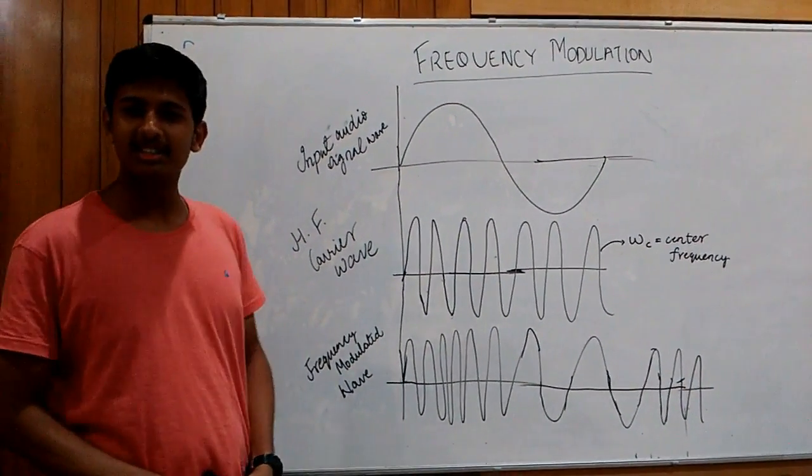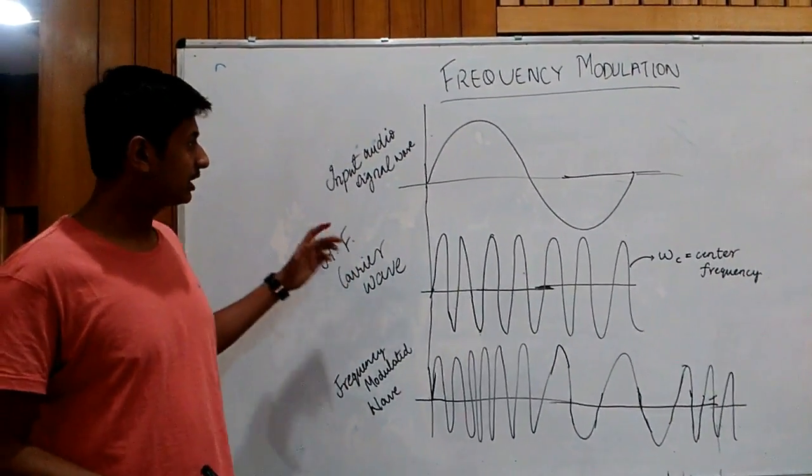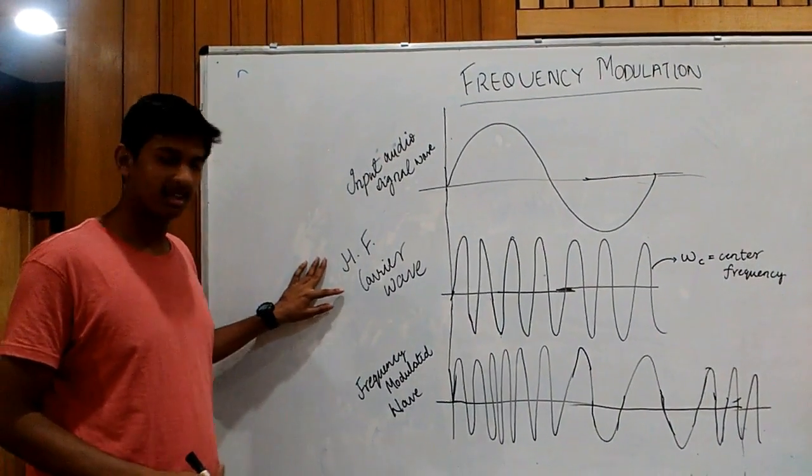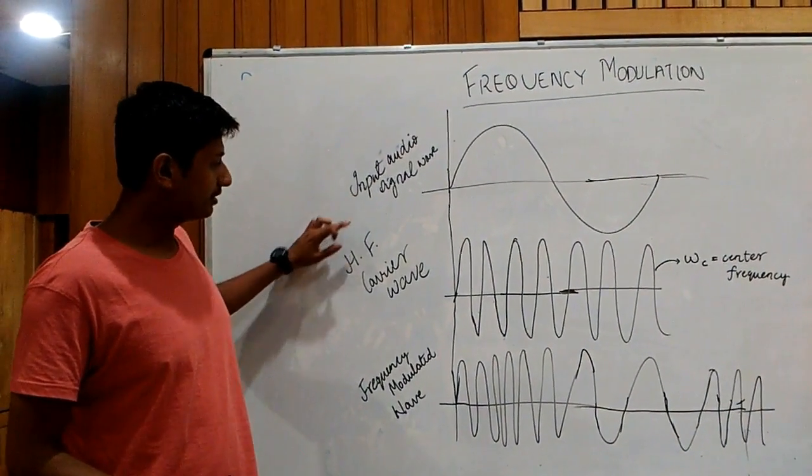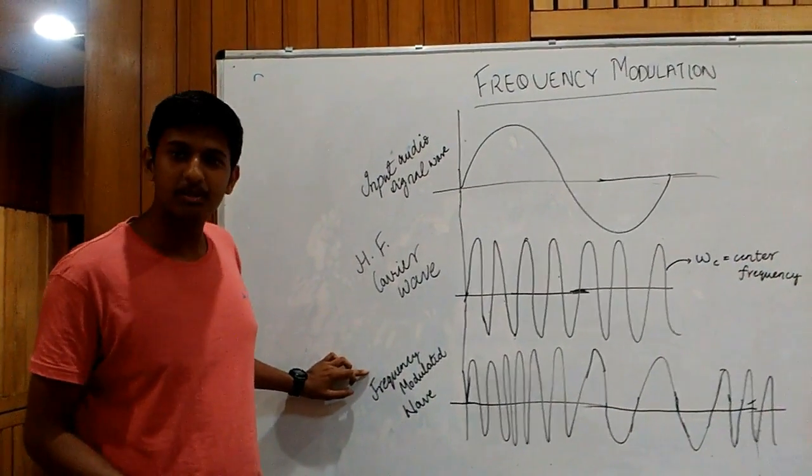Hi guys, the first thing we will discuss today is the frequency modulation of an audio wave. For the frequency modulation, we need an input audio signal wave and a high frequency carrier wave. The input audio wave is superimposed with the carrier wave and the resultant is known as the frequency modulated wave.